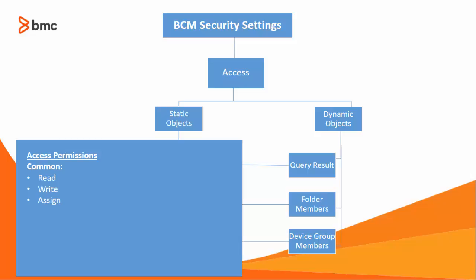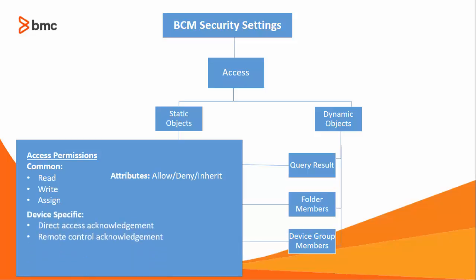For each of these permissions, you can set any one of three attributes: Allow, Deny, or Inherit. The Allow attribute enables the permissions on the object. The Deny attribute disables the permission on the object. The Inherit attribute allows or denies access to an object based on its membership from a folder or a group. For example, if the administrator has write permission for a device group that runs Windows 7, when a device in that Windows 7 device group has inherit permission, the administrator will automatically get write permission on that device.